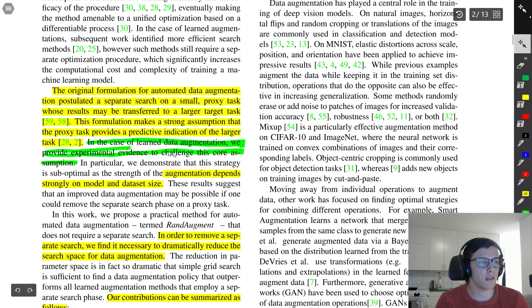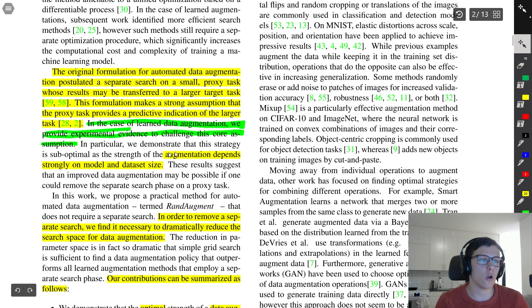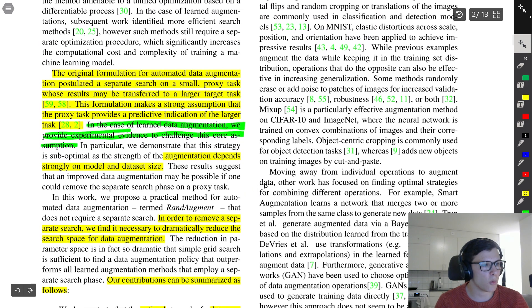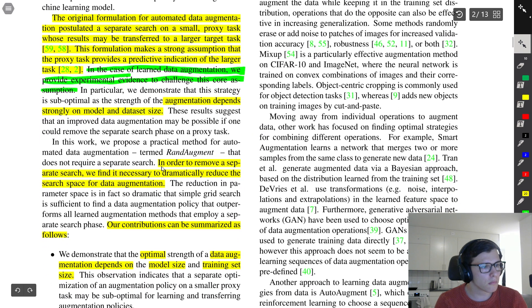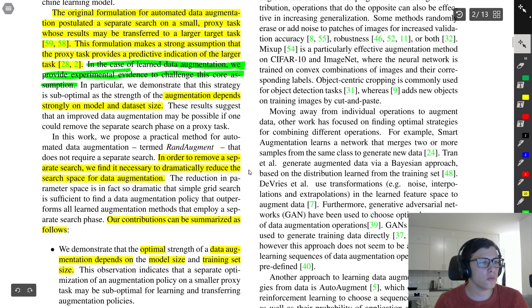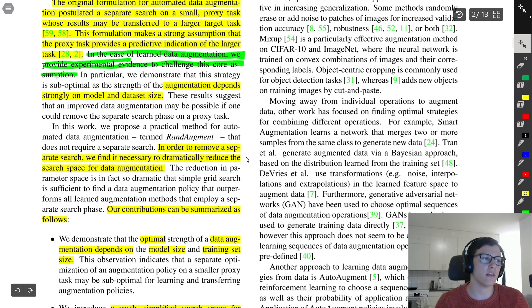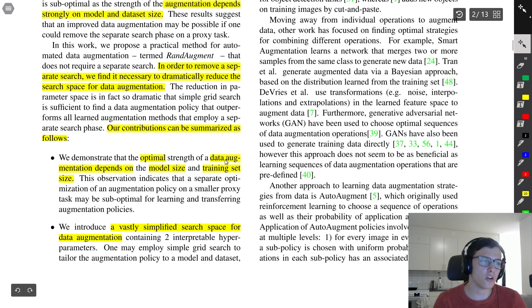They provide experimental evidence to challenge this assumption and they also show that augmentation depends strongly on the model and dataset size in perhaps non-intuitive ways. In order to remove that separate search for finding the hyperparameters for the policy, what is necessary is to reduce the search space.